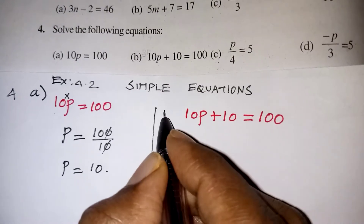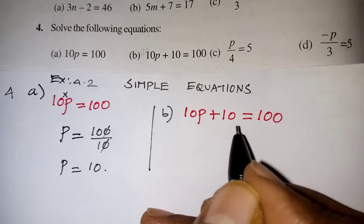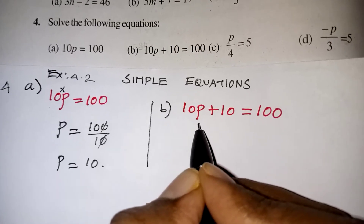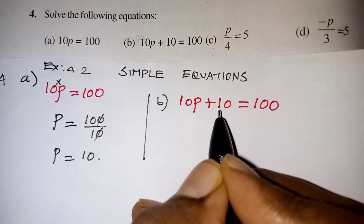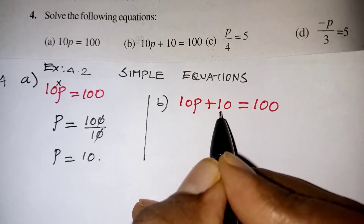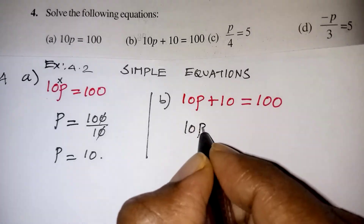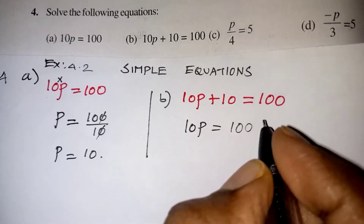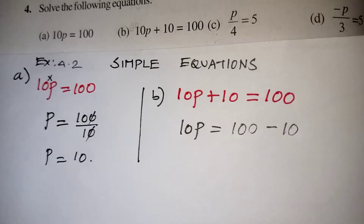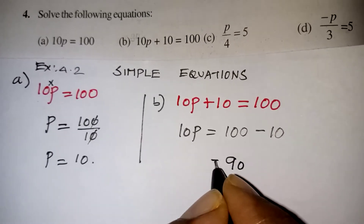Let us look at the next problem, problem b: 10p plus 10 is equal to 100. Here also we are going to find the value for p. But first we have to remove this 10 to the other side. This is a plus 10, so if it is an addition and you take it to the other side, it will become a minus. So it will be 10p is equal to 100 minus 10, which gives you 90.